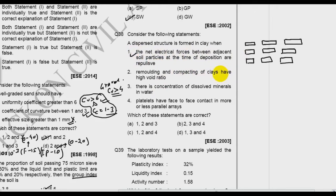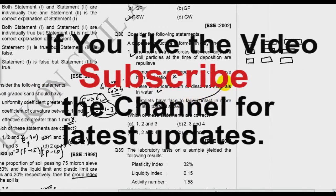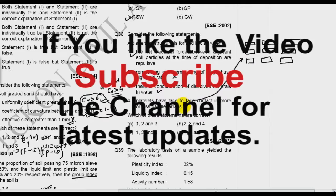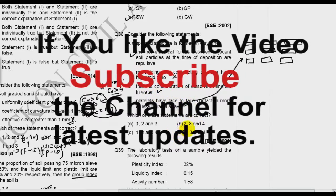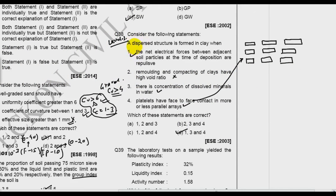Remolding and compacting of clay have high void ratio. There is no linkage of this part. I don't know what it means to say. It is nothing related. There is concentration of dissolved mineral in water. Yeah, it is cation exchange theory. So this is also right. And pellets have face to face contact in more or less parallel array. So this is also right. So 1, 3 and 4 are right. I will say that this is a level 3 question. Lot of practice and thorough knowledge of the topic for dispersed structure.